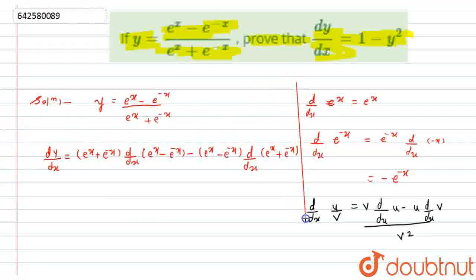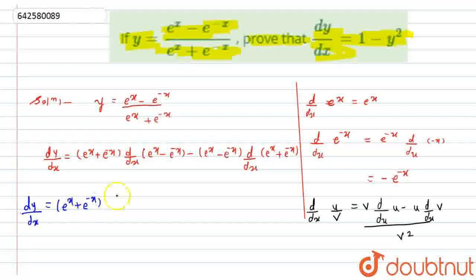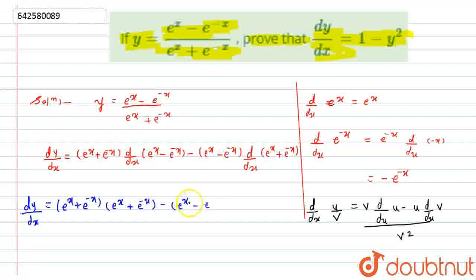In further solving, dy by dx will become equal to: the bracket (e raised to x plus e raised to minus x) as it is, and the derivative of (e raised to x minus e raised to minus x) will become e raised to x plus e raised to minus x — because of the minus sign on e raised to minus x, it becomes plus.